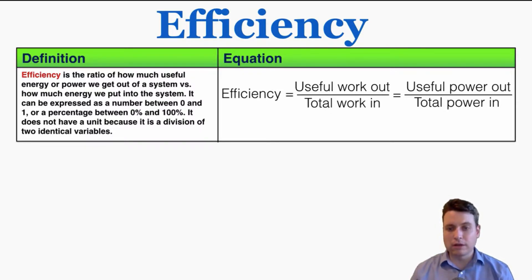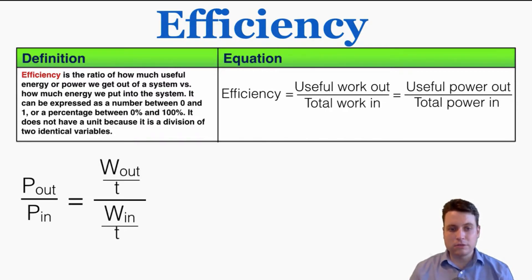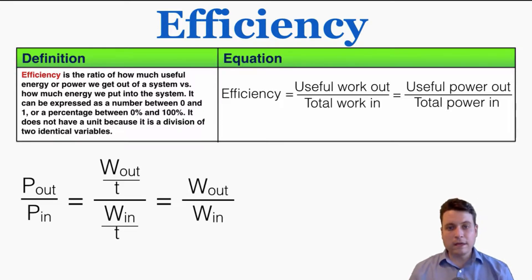Efficiency is the useful work out over the total work in, or the useful power out over the total power going into the system. To show that these two are equivalent: power out over power in — because power equals work over time — equals work out over time divided by work in over the same time. Canceling out the time gives us useful work out over total work in.